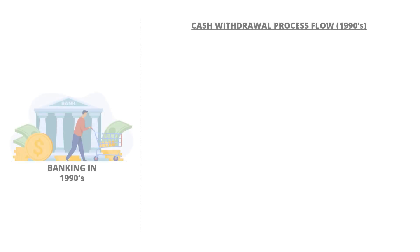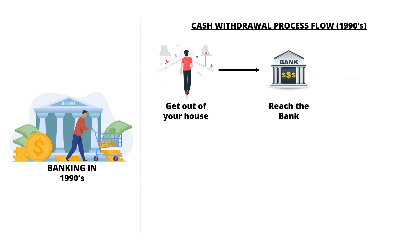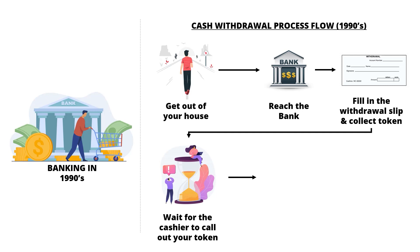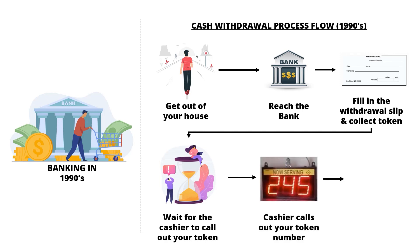In the 1990s, if my father wanted to withdraw cash from the bank, he would walk to the bank, fill in a withdrawal slip, and collect a token number. He would then wait for the cashier to call out his token number, and after it was announced, collect the cash. That was the entire process.